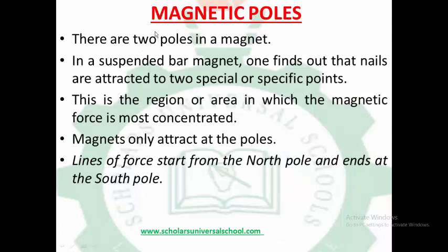Now, magnetic poles. There are two poles in a magnet. With a suspended bar magnet, one finds that nails are attracted to two special or specific points. This is the region or area in which the magnetic force is most concentrated. If you suspend a bar magnet, you will notice that nails move to two specific points — that is, the North Pole and the South Pole — where the magnetic force is most concentrated.